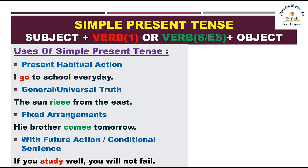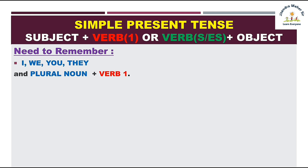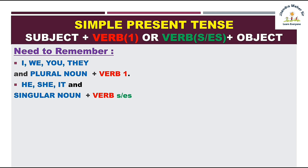Kuch cheezein yaad rakhni hain jo bachche aksar bhool jaate hain. I, we, you, they, aur plural noun — jab aaye tab verb ka first form simple present mein likhna hai. He, she, it, aur singular noun — jab ho toh verb ko S ya ES add karna hai. Yeh yaad rakhna bahut zaroori hai. Ab dekhte hain verb ko S kab lagayein aur ES kab lagayein.